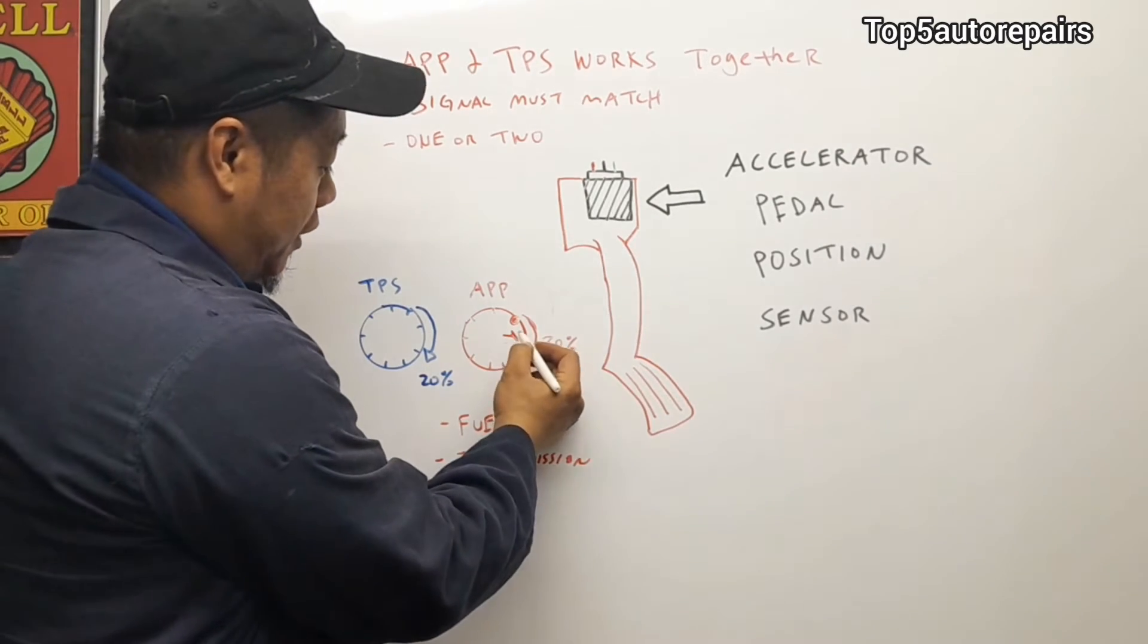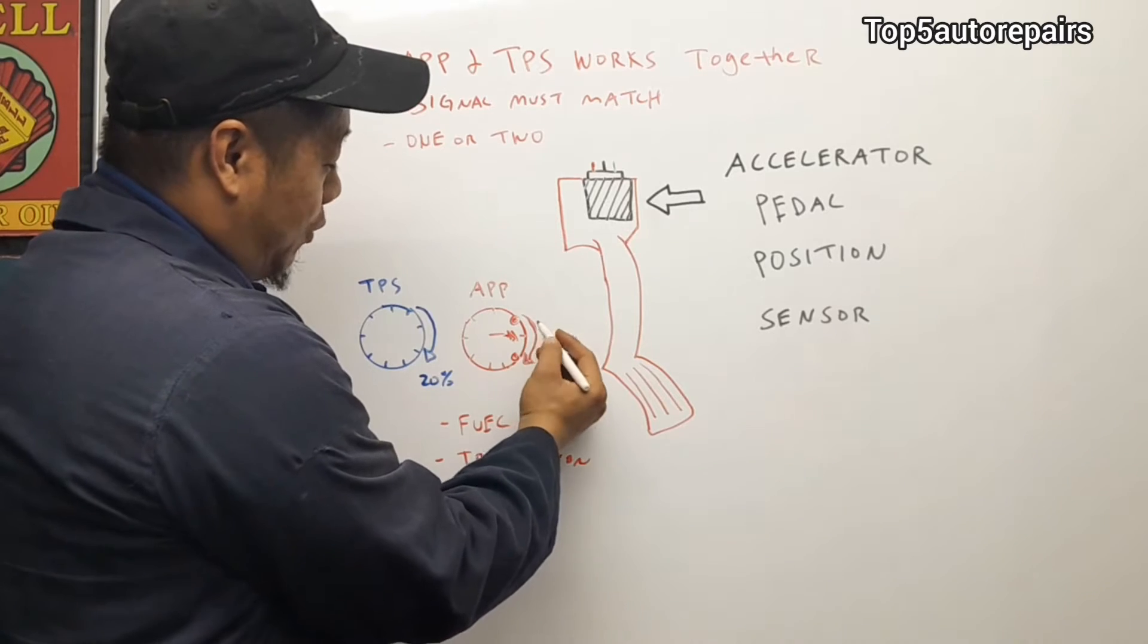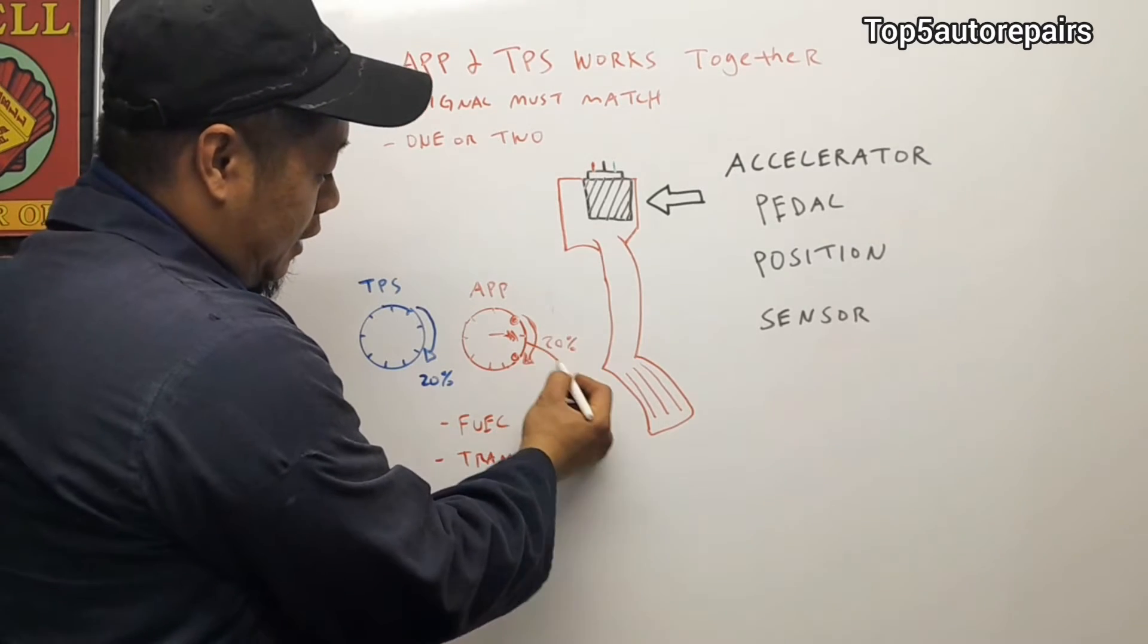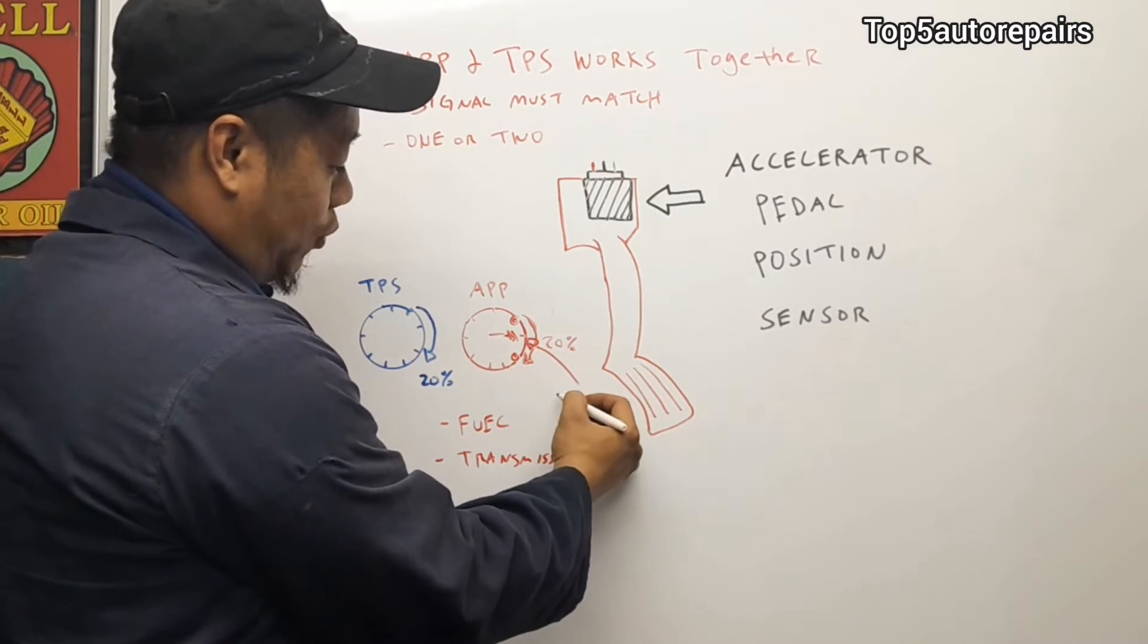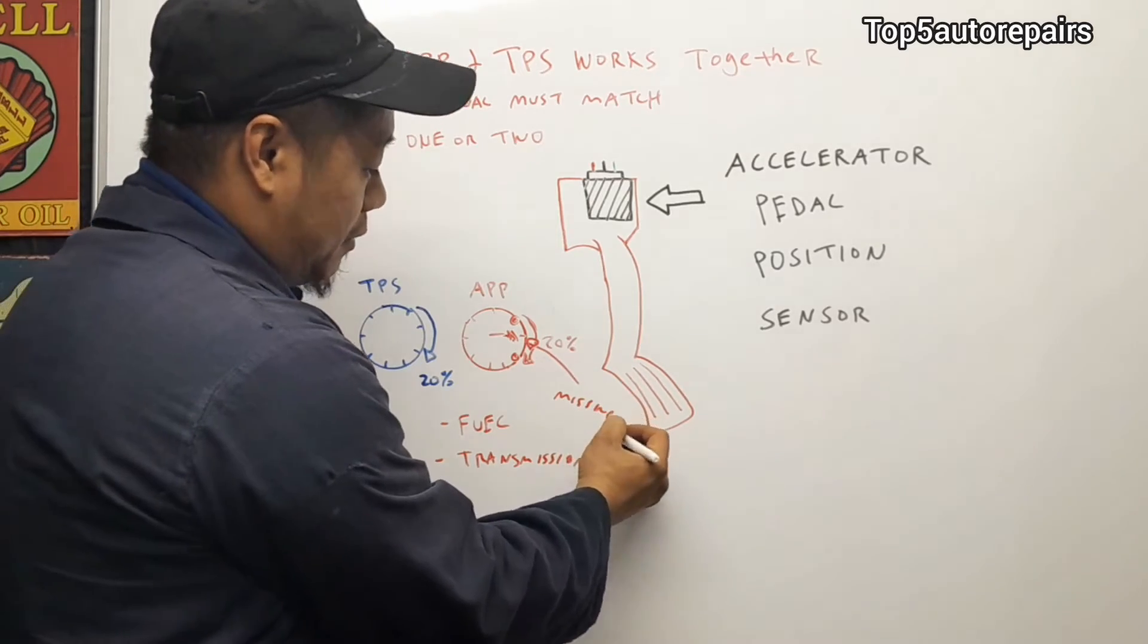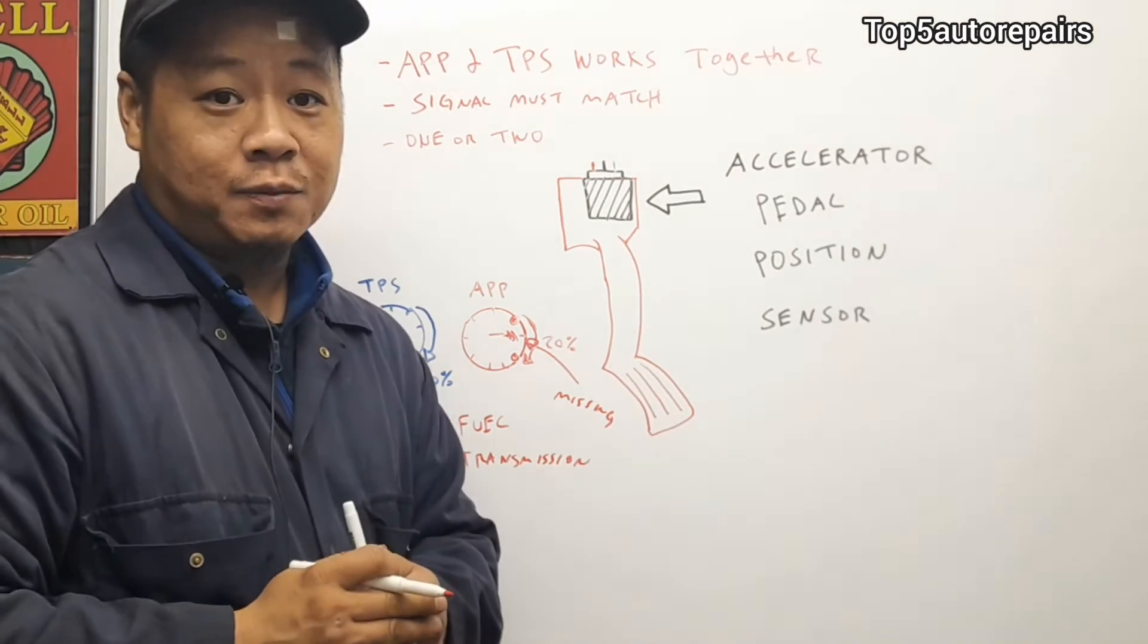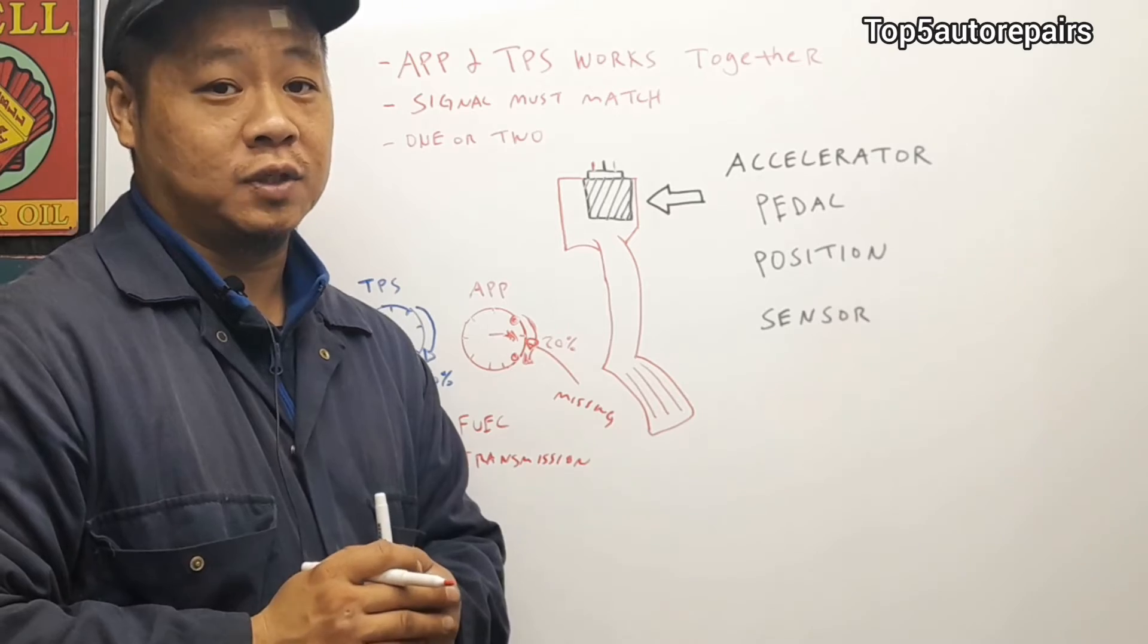Let's say this contact point over here is worn. When signals are sent to the computer, this signal on this contact point will be missing. When that is missing, I'll tell you exactly what's going to happen.